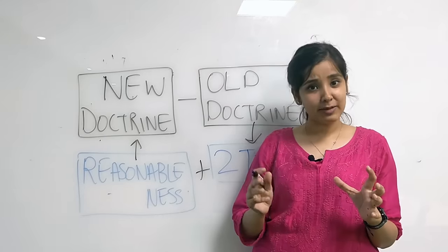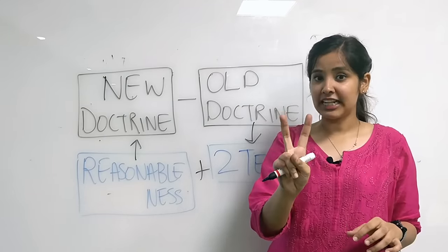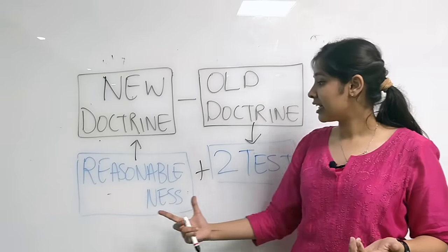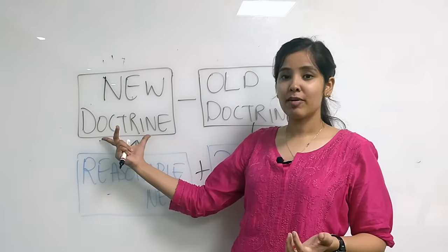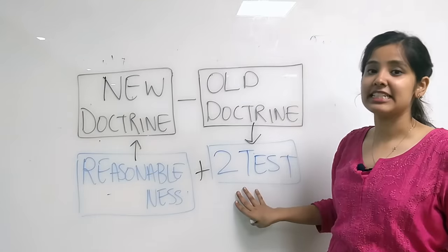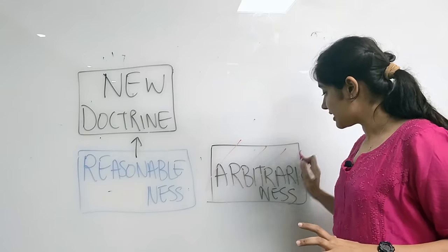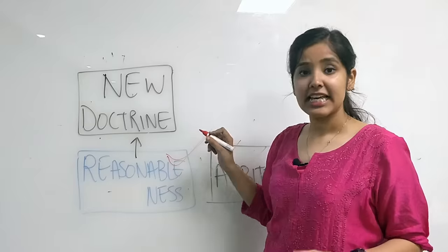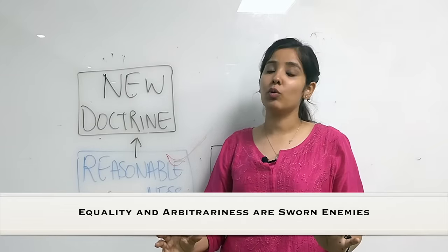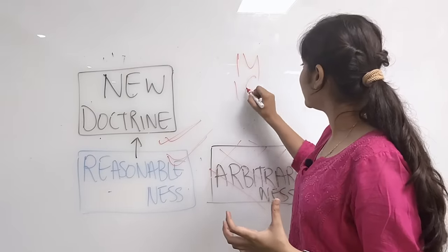Toh State of Bombay versus FN Balsara ke case se humein mila tha old doctrine. Jisne humein de the two factor test, intelligible differentia and rational nexus. In do test mein agar hum reasonableness add karein, toh woh ban jata hai hamara new doctrine. So new doctrine is reasonableness plus the existing test. So the new doctrine targets arbitrariness and supports reasonableness. It says if anything is arbitrary, it is opposed to equality. Isi concept ka expansion hai ki aage jaake we had the golden triangle between 14, 19 and 21.